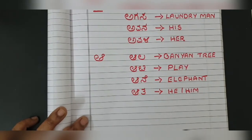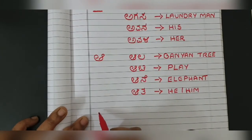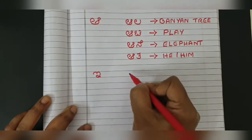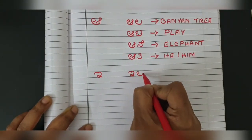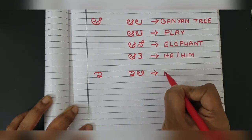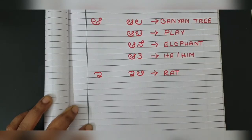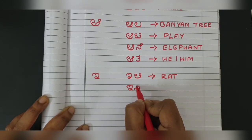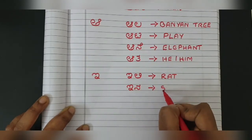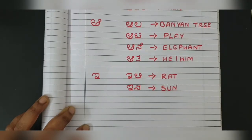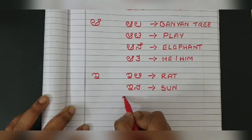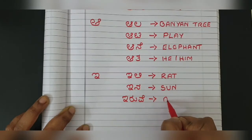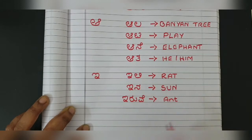Now let's look at the next letter in the swaras — that is 'I.' From the letter I, the first word is 'ili' — I-L-I. Ili means rat. The second word is 'ina' — I-N-A. Ina means sun. The third word is 'iruwe' — I-R-U-W-E. Iruwe means ant.